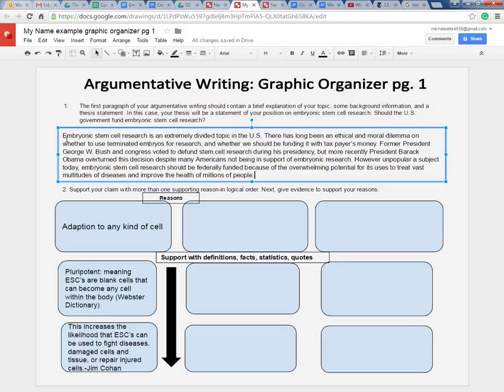Basically, she outlines the position. She gives some background information on policy in the United States currently and previously. Then she states her thesis statement in a sentence. She says, however unpopular a subject today, embryonic stem cell research should be federally funded because of the overwhelming potential for its uses to treat vast multitudes of diseases and improve the health of millions of people.